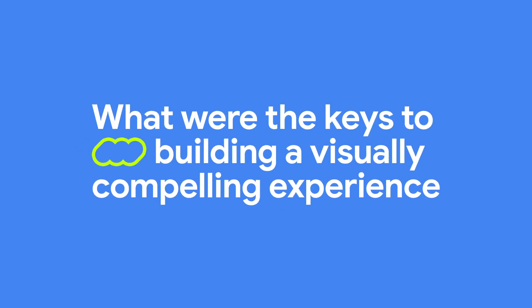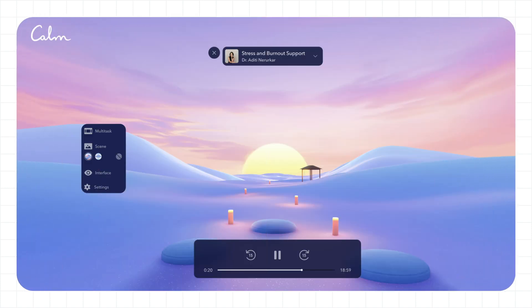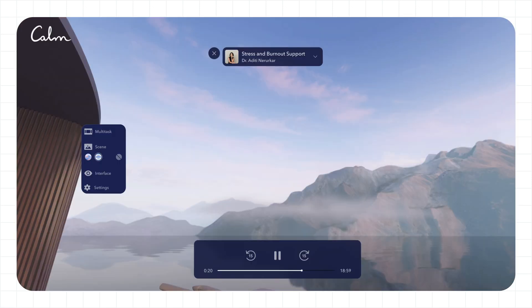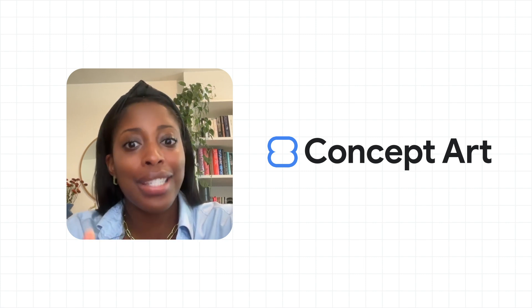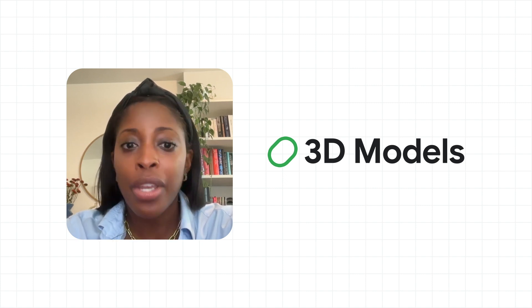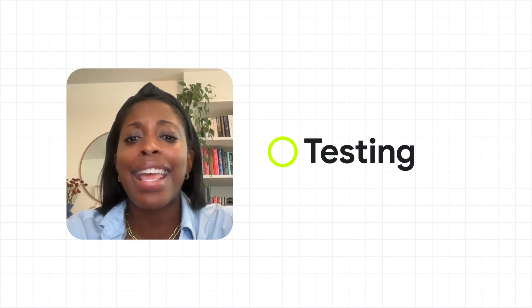What were the keys to building a visually compelling experience that feels native to the Android XR platform? The immersive canvas really allowed us to rethink how users engage with mindfulness content — not just listening or watching, but really inhabiting. The interface gently encourages exploration, offering users agency while maintaining a clear, emotionally attuned path. We started with concept art to establish our direction, then translated that into 3D models using a human scale reference to ensure natural proportions. Whenever possible, we tested the assets directly in a headset to fine-tune scale, lighting, and atmosphere.